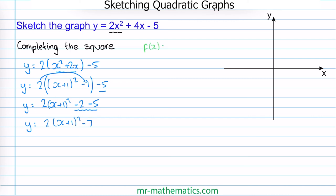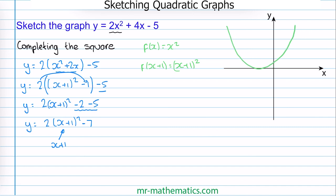We'll start with f of x again as x squared and build this up. So we're going to replace x with x plus 1. So we have f of x plus 1 is equal to x plus 1 squared, and this is a horizontal translation — this time we're moving one unit to the left, so along the x-axis this has moved to negative 1. Now we're going to consider the multiplication by 2, writing this with function notation as 2 lots of f of x plus 1, which gives us 2 lots of x plus 1 squared. This is a vertical stretch where we are compressing the curve by a scale factor of 2.